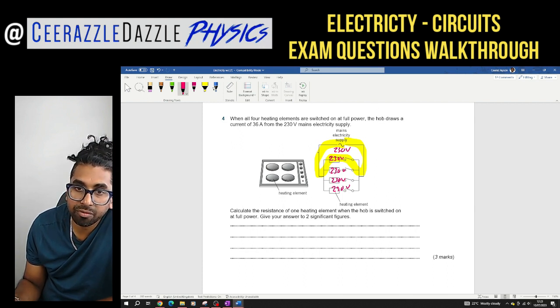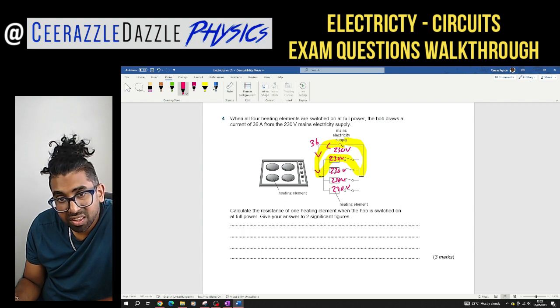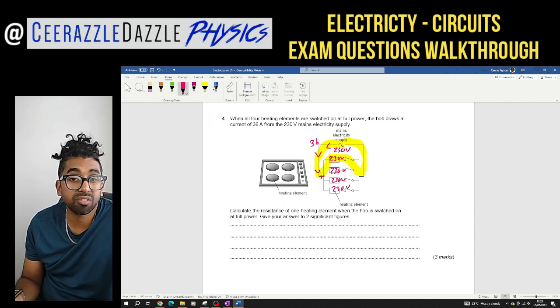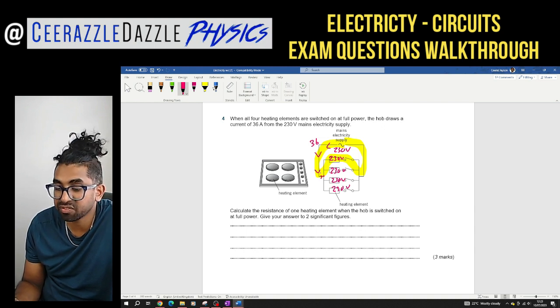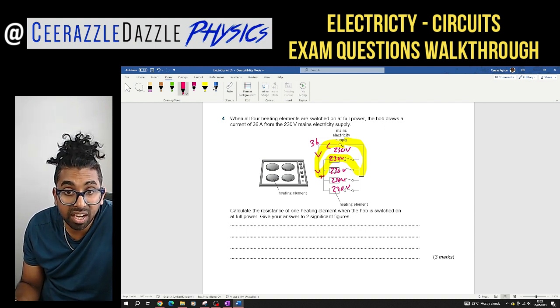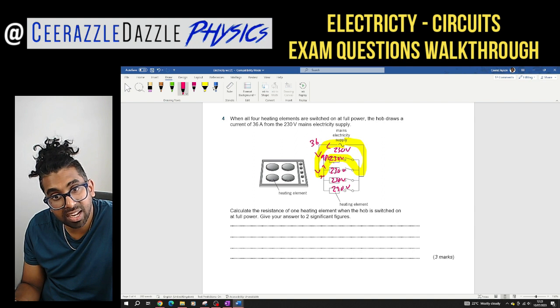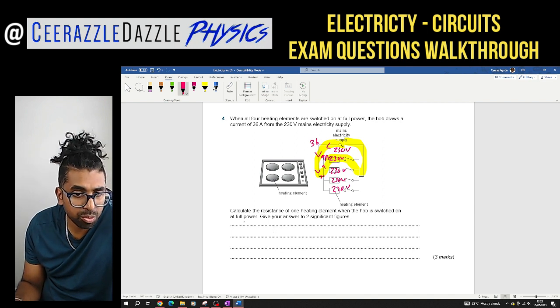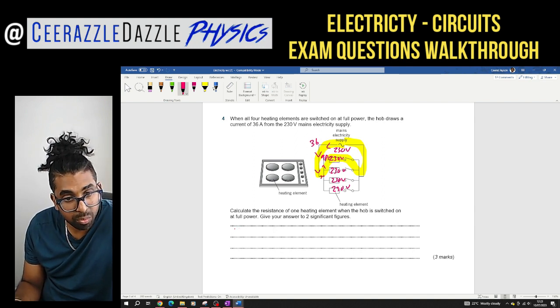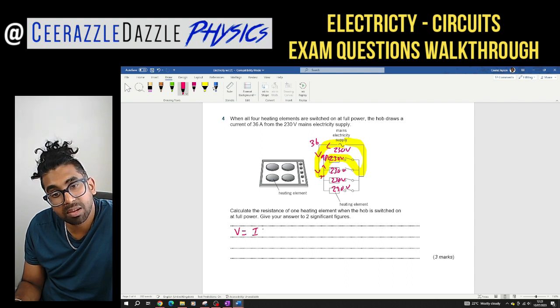The hob draws a current of 36 amps. So it's taking 36 amps over here. But look, the current will enter the junction and there's four paths. So we're going to divide it by four. So 36 divided by four is going to be nine. So each one of them gets nine amps over here. So each one of them gets nine amps. So finally, if I want to work out the resistance, we can use V equals I times R. The resistance is therefore equal to the voltage divided by the current.